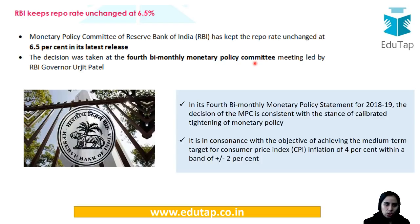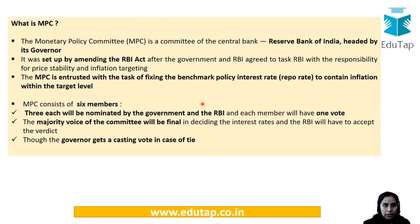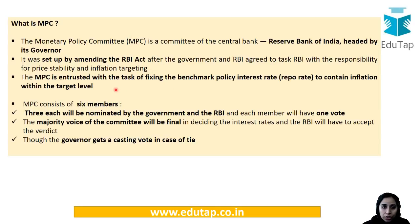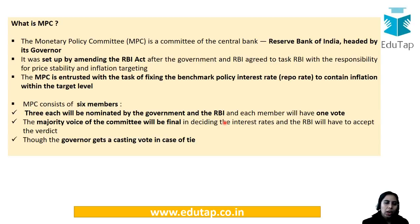The bimonthly statement has been released, and they have announced calibrated tightening of the monetary policy — you have to remember this. The MPC is a committee of the central bank and the government — specifically of RBI — and its members include representatives from both the government and RBI. It was set up under the RBI Act and is entrusted with the task of fixing the benchmark policy rate, that is, the repurchase rate. It consists of six members: three from the government and three from the RBI, each with one vote. However, the Governor has a very important casting vote in case of a tie.